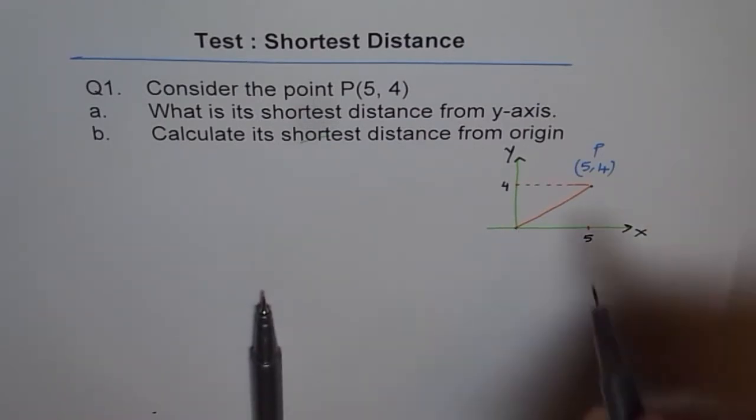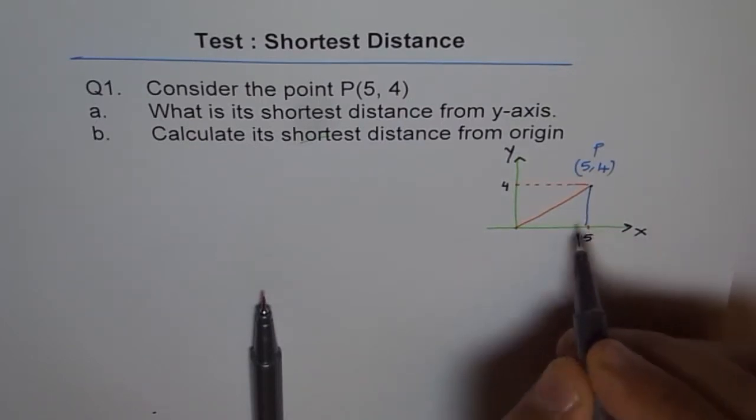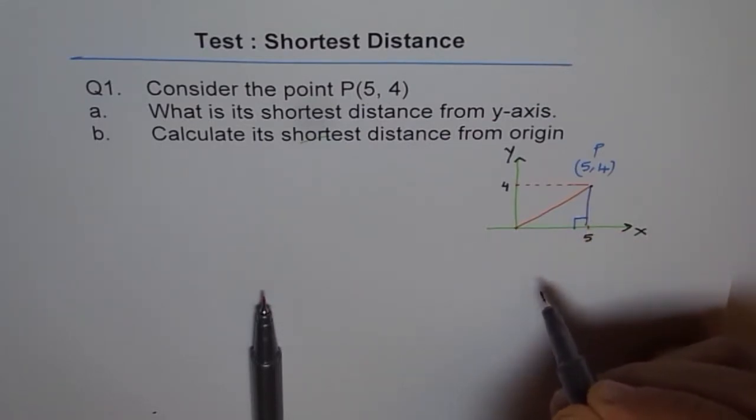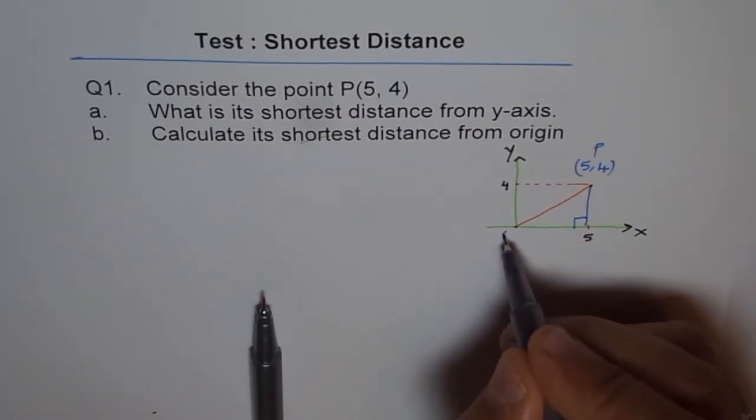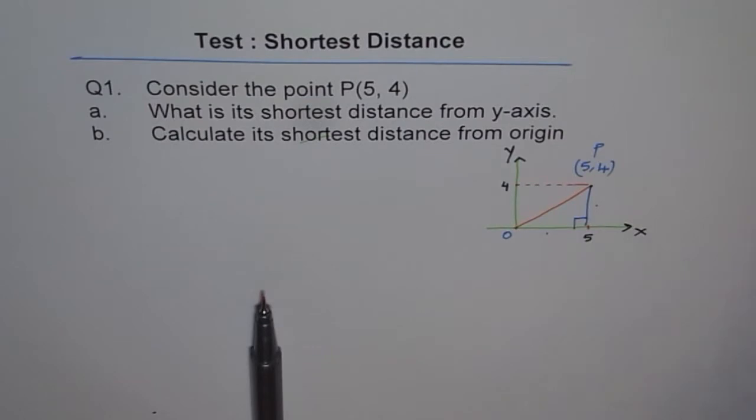We'll join these lines. So when you drop a perpendicular from the point P to x-axis, it forms a right triangle, correct, with 90 degrees with the x-axis. Now the distance from origin to the point P is 5 square plus 4 square, square root. Do you understand? That is what it is.